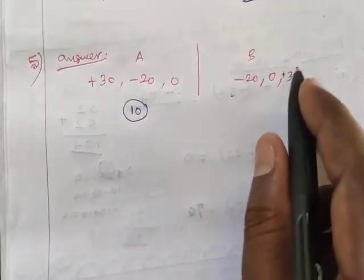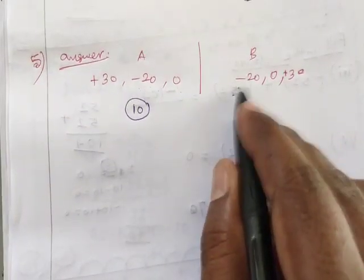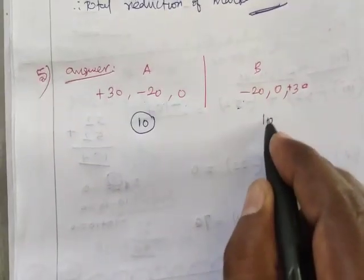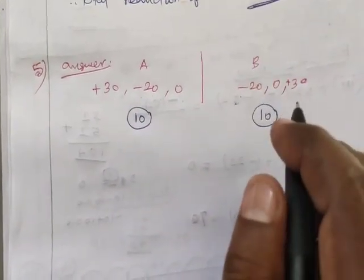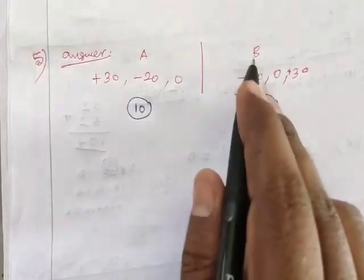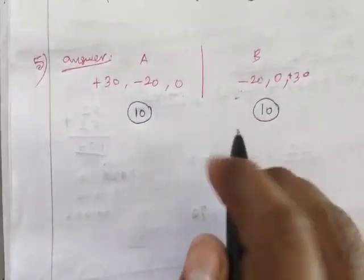If we compare, minus 20 plus 0 plus 30. 30 minus 20 is 10. 10 plus 0 is 10, so team A is 10, team B is 10 score.